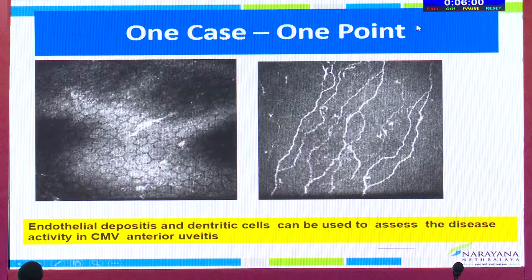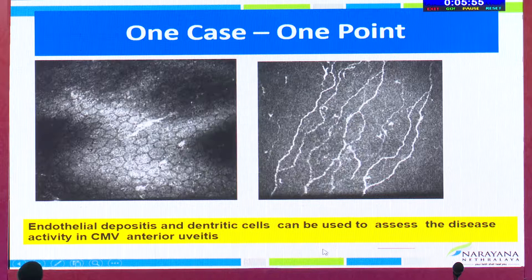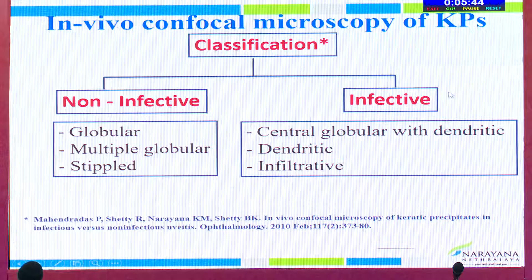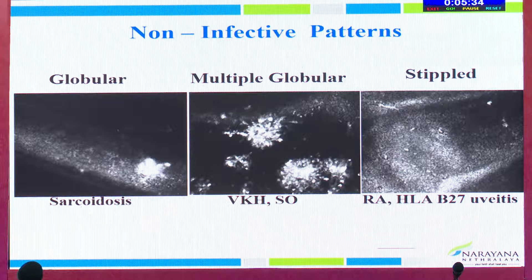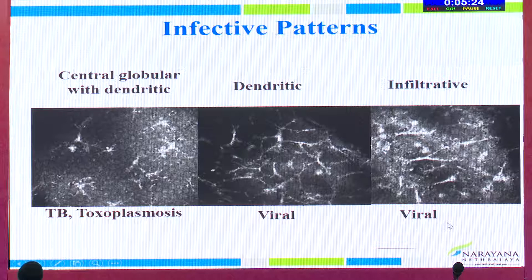Endothelial deposits and the dendritic cells can be used to assess disease activity in a case of CMV anterior uveitis. In vivo confocal microscopy, we have reported both non-infective and infective patterns — the globular, multiple globular or stippled patterns are non-infective. There could be an overlap of infective and non-infective patterns in certain cases. Non-infectious patterns like globular or tiny stippled are seen in sarcoidosis, VKH, and HLA-B27 associated uveitis. The most important infective patterns: central globular with dendritic is seen in TB or toxo; dendritic pattern is commonly seen in viral; infiltrative is again specific for viral etiology.